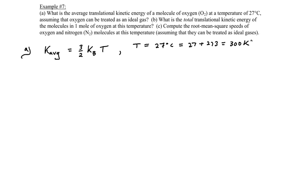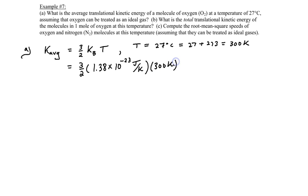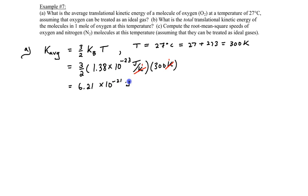Now we substitute 300 Kelvin into the formula: (3/2) × 1.38 × 10⁻²³ J/K × 300 K. You can see the units of Kelvin cancel out — a reminder of why we must convert Celsius to Kelvin. The result is 6.21 × 10⁻²¹ joules, which is the average energy possessed by a single molecule.